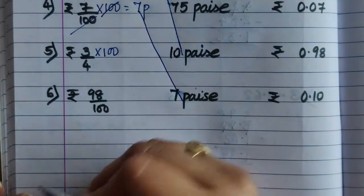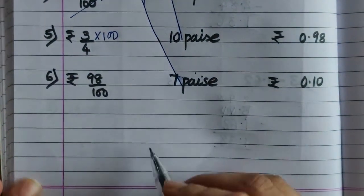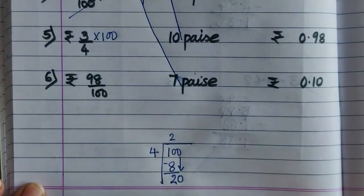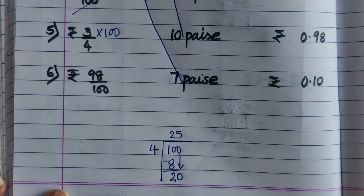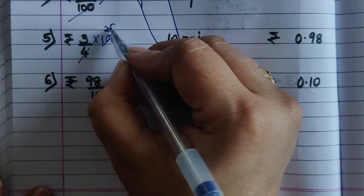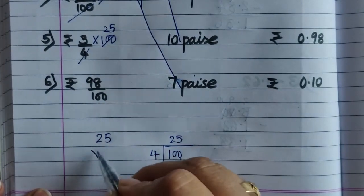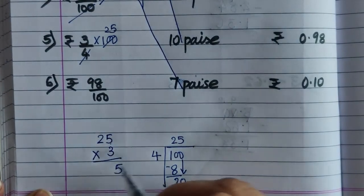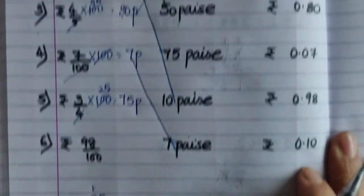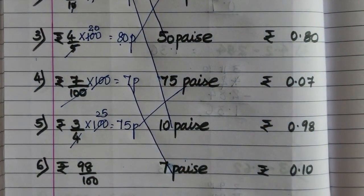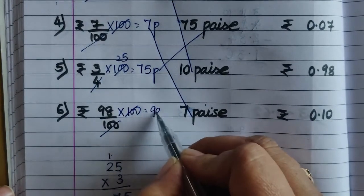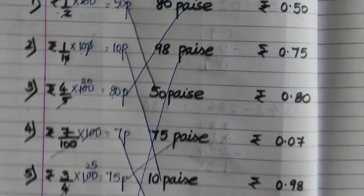3 by 4 and multiply by 100: 4 के table में 100 कब आता है — divide करके देखें: 4 टूजा 8, यहाँ 2 and 0, 4 के table में 20 कब आता है: 5 जा, 4 फैसा 20, therefore 4 के table में 100 कब आता है: 25 जा. Now 25 multiply by 3: 3 फैसा 15, 1 carry over, 3 टूजा 6 plus 1 is 7. तो हमारा answer आया 75 पैसे, so 75 को 75 से match करेंगे. Now 98 upon 100 multiply by 100: 100, 100 cut — 98 पैसे. So, हम इसे 98 के साथ match करेंगे.